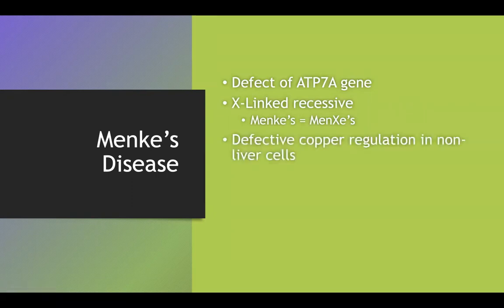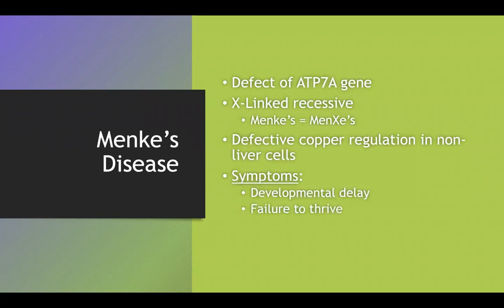Wilson's disease is caused by defective copper regulation in liver cells, whereas Menkes disease is caused by defective copper regulation in non-liver cells. With Menkes, you're going to get developmental delay, failure to thrive, as well as the classic brittle or kinky hair, which usually shows up on tests.